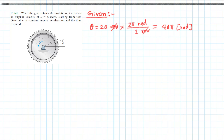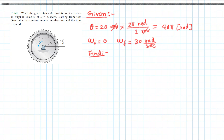The gear starts from rest, meaning the initial angular velocity ω_initial equals zero, and the final angular velocity achieved is 30 radians per second. We are asked to find the constant angular acceleration (α_c) and the time required.